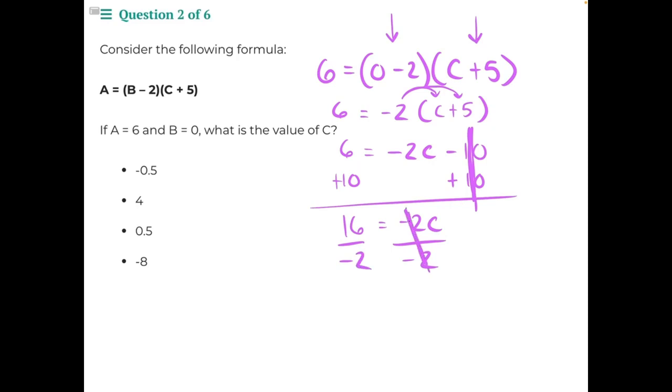These will cancel each other out, leaving us with 16 divided by negative 2. Negative 8 equals C. So our answer is negative 8.